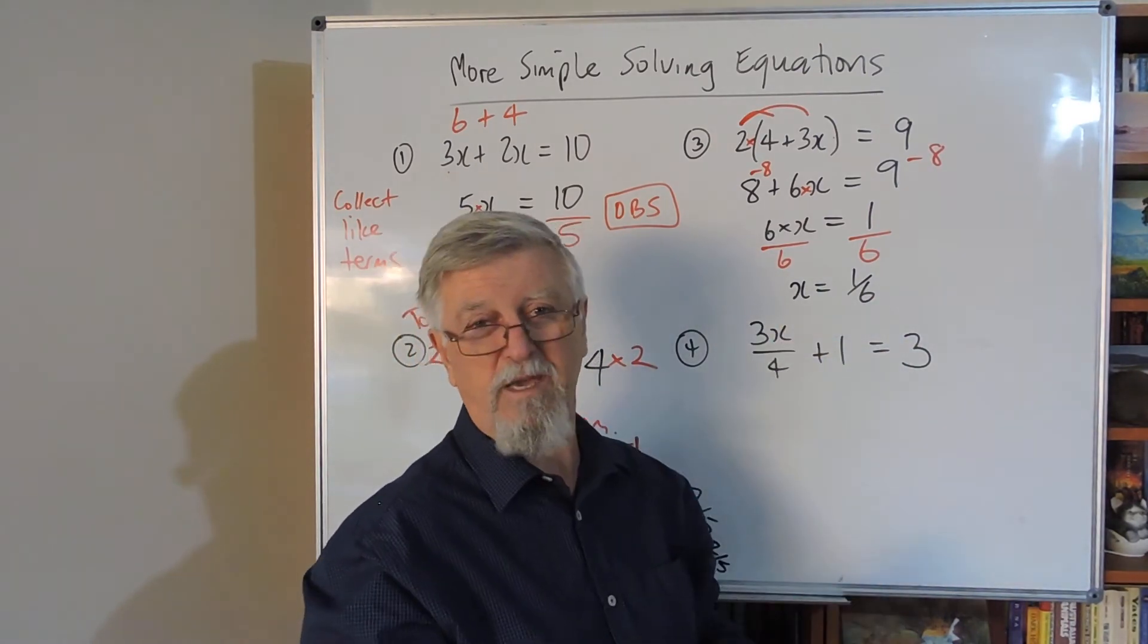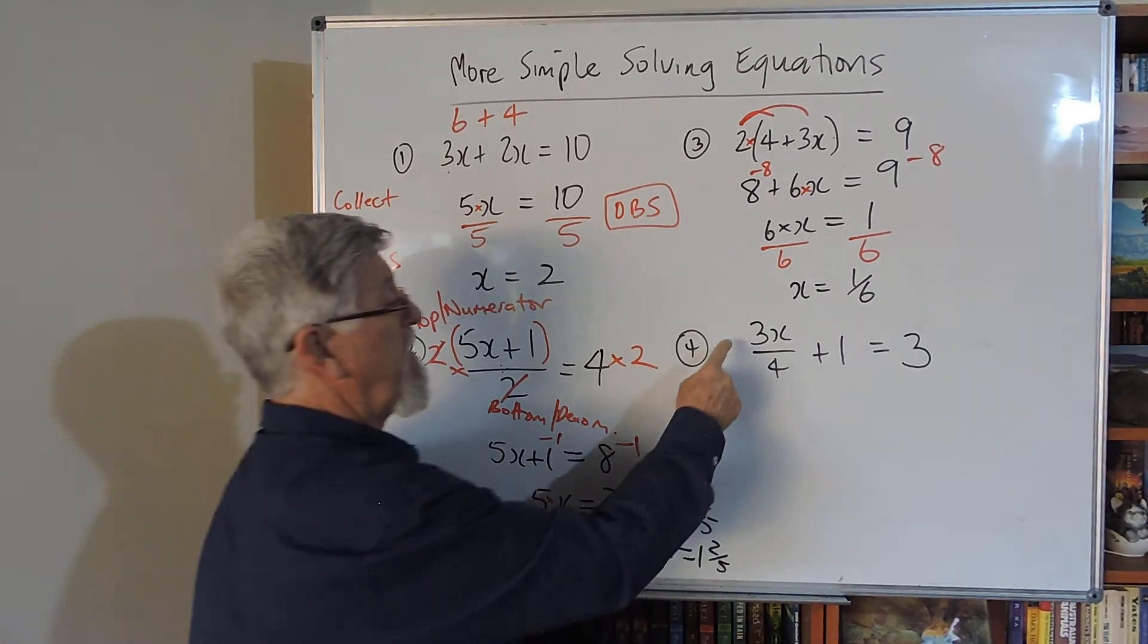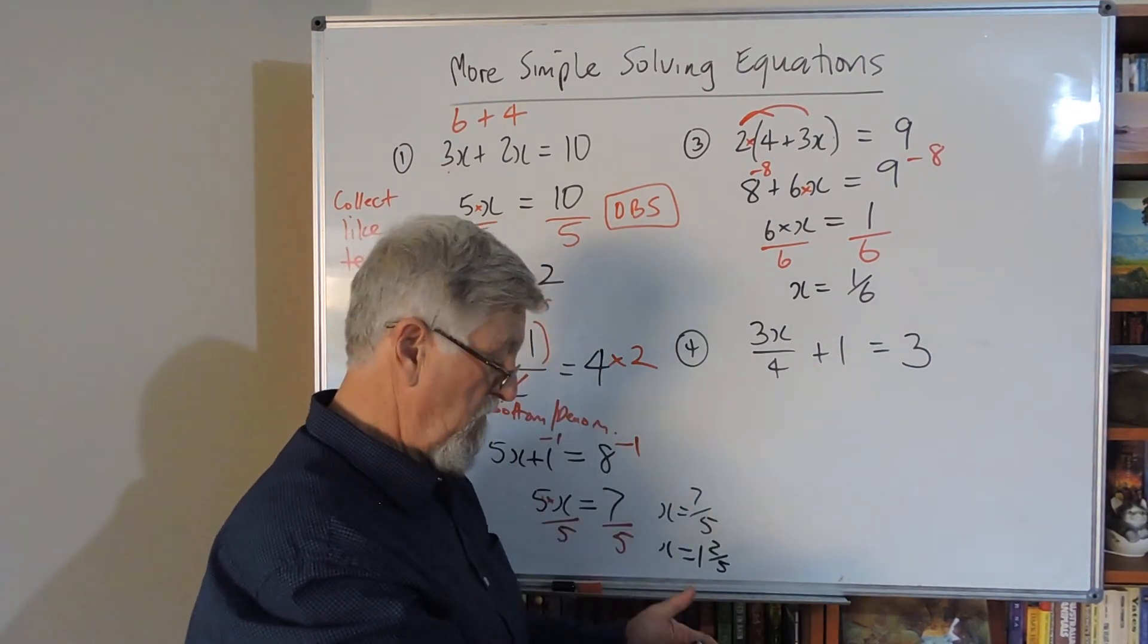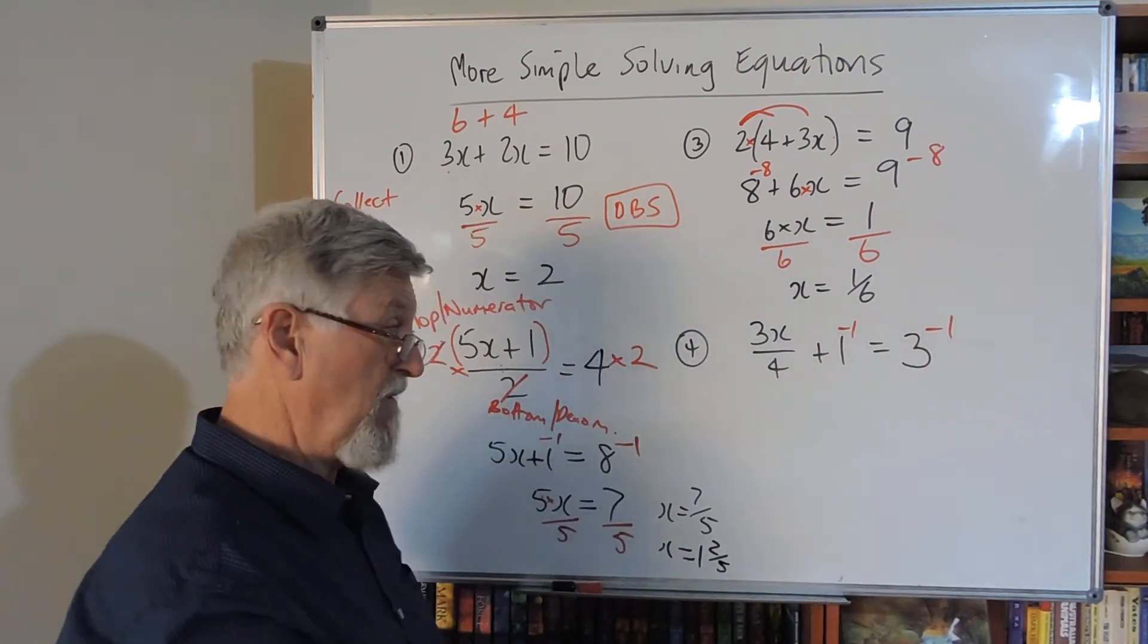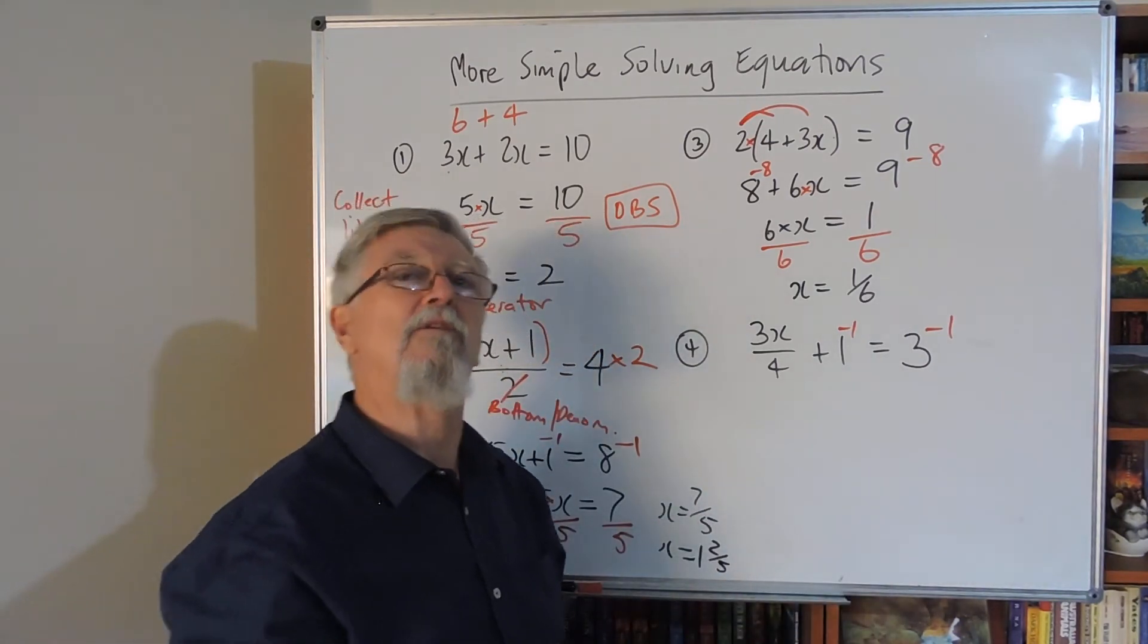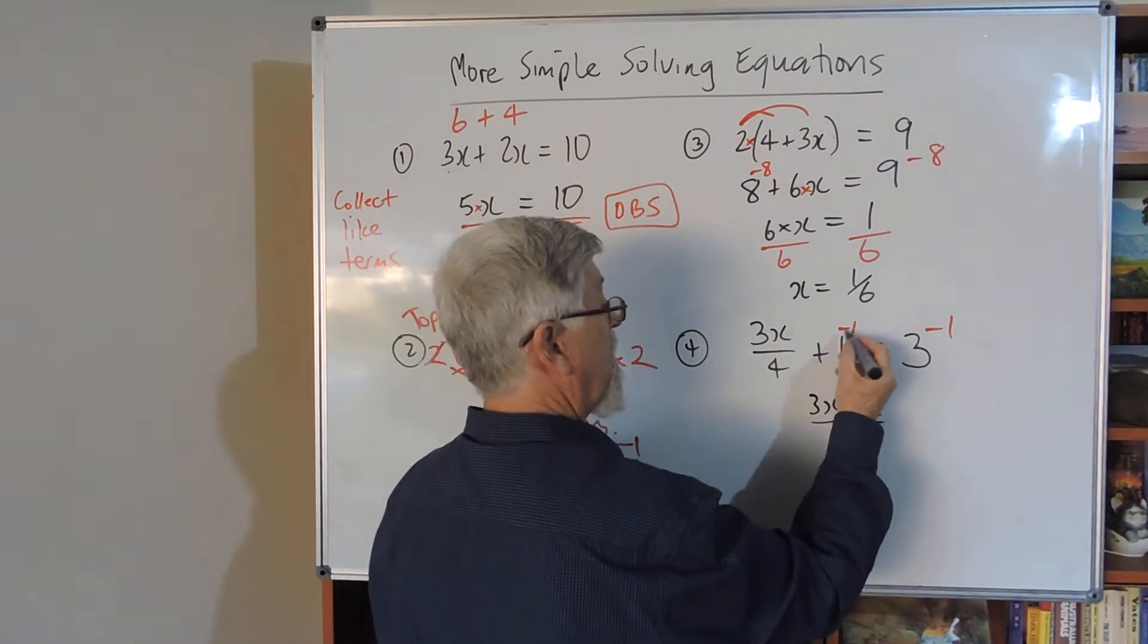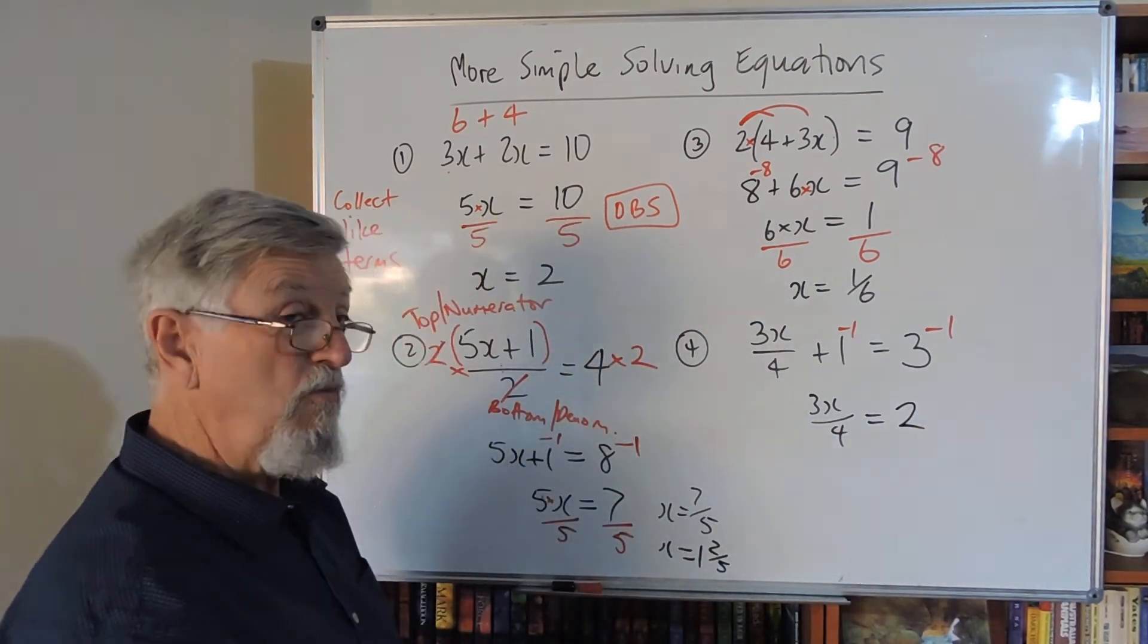Let's look at this one: 3x/4 + 1 = 3. The 3 is married to the x, the 4's got the divide keeping it with the x, but the 1 is sitting there by itself. So I can get rid of that first. Minus 1, minus 1. I'm left with 3x/4 = 2.